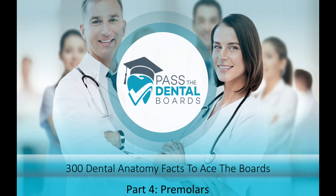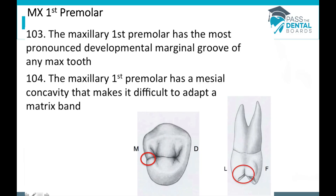We're going to continue our 300 dental anatomy facts and we're going to be focusing on the premolars. The maxillary first premolar has the most pronounced developmental marginal groove of any maxillary tooth. Here's a picture of the marginal groove — very pronounced.